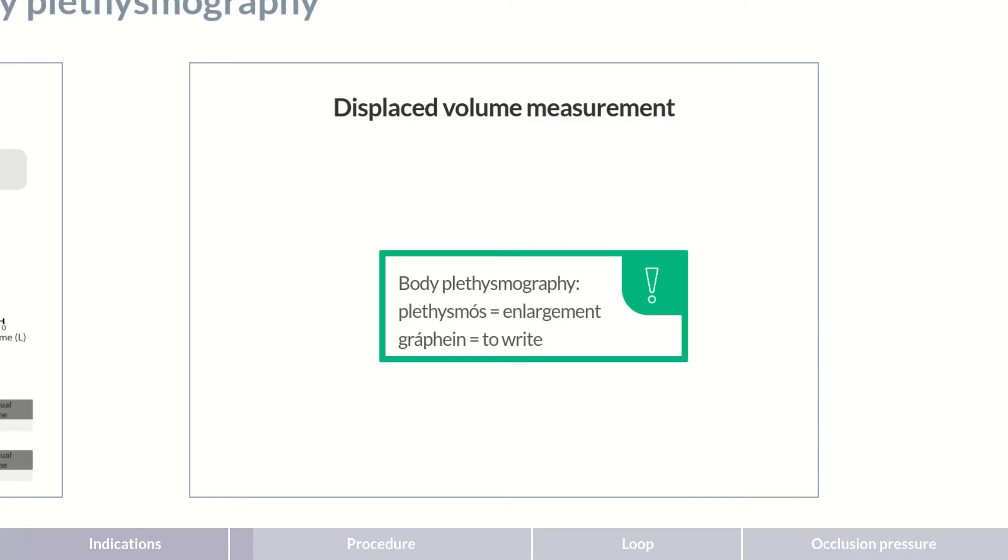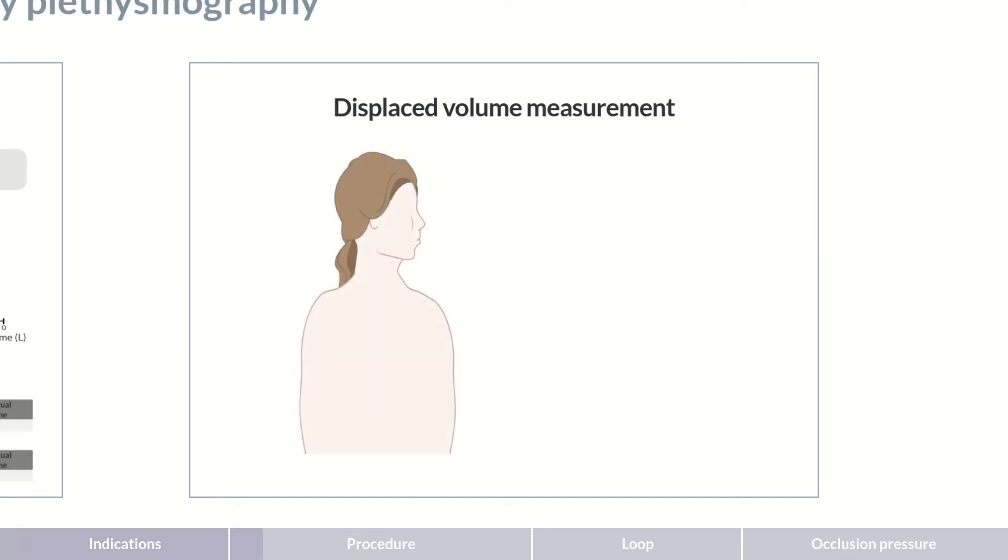Through this procedure, the total volume in the lungs is determined, including the volume that can't be exhaled. The idea behind body plethysmography is to measure lung volume noninvasively and outside the thorax.